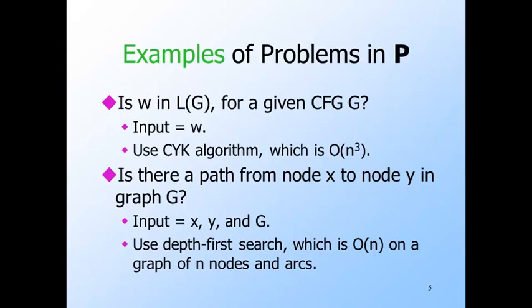Represent the i-th node by N followed by i in binary, and represent an arc by a pair of nodes — the tail and head. Use two special symbols to indicate the source and sink nodes. Note that if there are M nodes, it takes O(log M) space to represent one node, so the input length n is somewhat greater than the number of nodes and arcs, but this is unimportant since we only worry about polynomial versus not polynomial. Depth-first search answers the reachability question in time linear in the number of nodes and arcs — O(n^2) steps on a Turing machine, which is still polynomial.